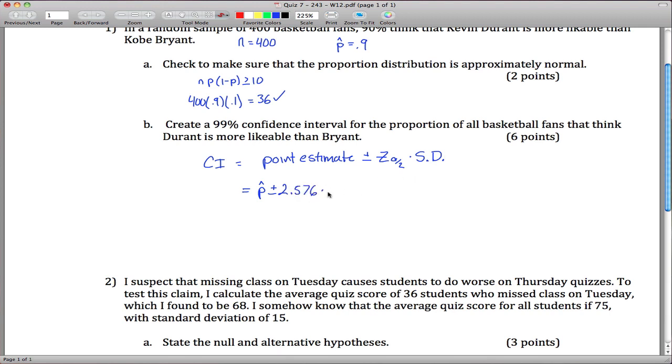Then we want to multiply that by the standard deviation. The standard deviation of our proportion is equal to the square root of p times 1 minus p divided by n. We don't know p but we can estimate that with p-hat, so we get 0.9 times 0.1 divided by 400, and then take the square root of that.